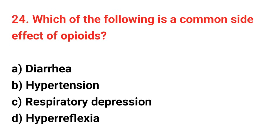Question number 24: Which of the following is a common side effect of opiates? The right answer is option C: Respiratory depression.